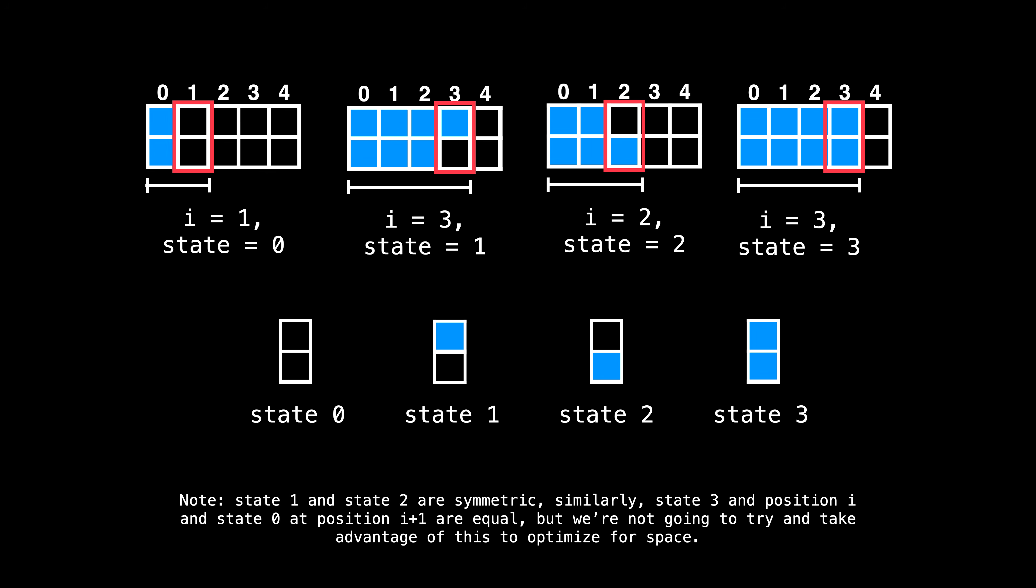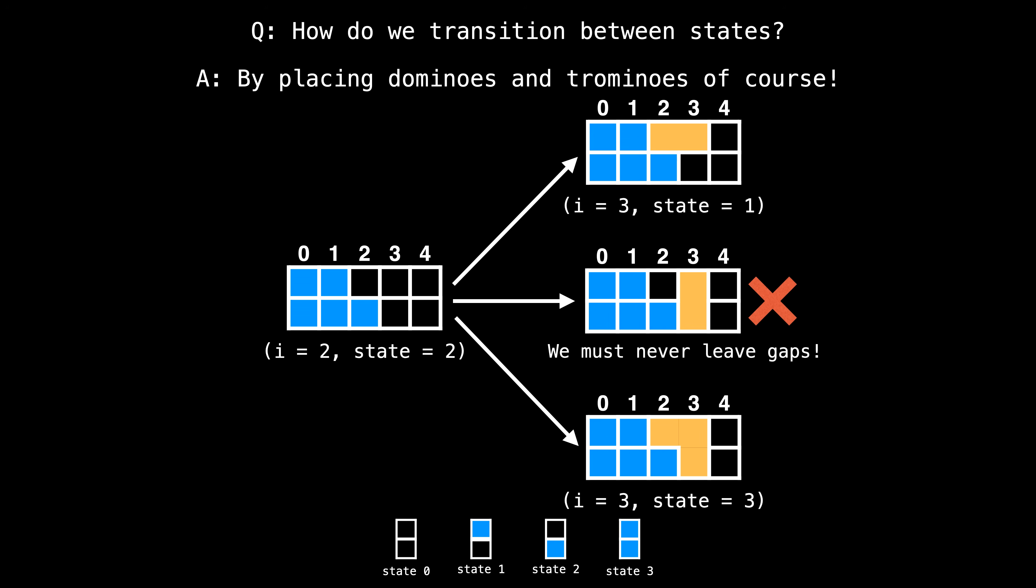Let's have a look at some examples of partial states. On the left is the partial state at i equals one with column state zero, meaning no tiles are filled in the current column. Beside this is the partial state with i equals three and column state one since only the top row is filled, followed by the partial state at i equals two with only the bottom row filled. And lastly is a partial state with i equals three and a full column state. You might have noticed by now that state one and state two are symmetric, and that state zero at position i+1 is equal to state three at column position i. So there's definitely some opportunity to save space and perform some kind of optimization. But that's not going to matter for this problem because the constraints are so small.